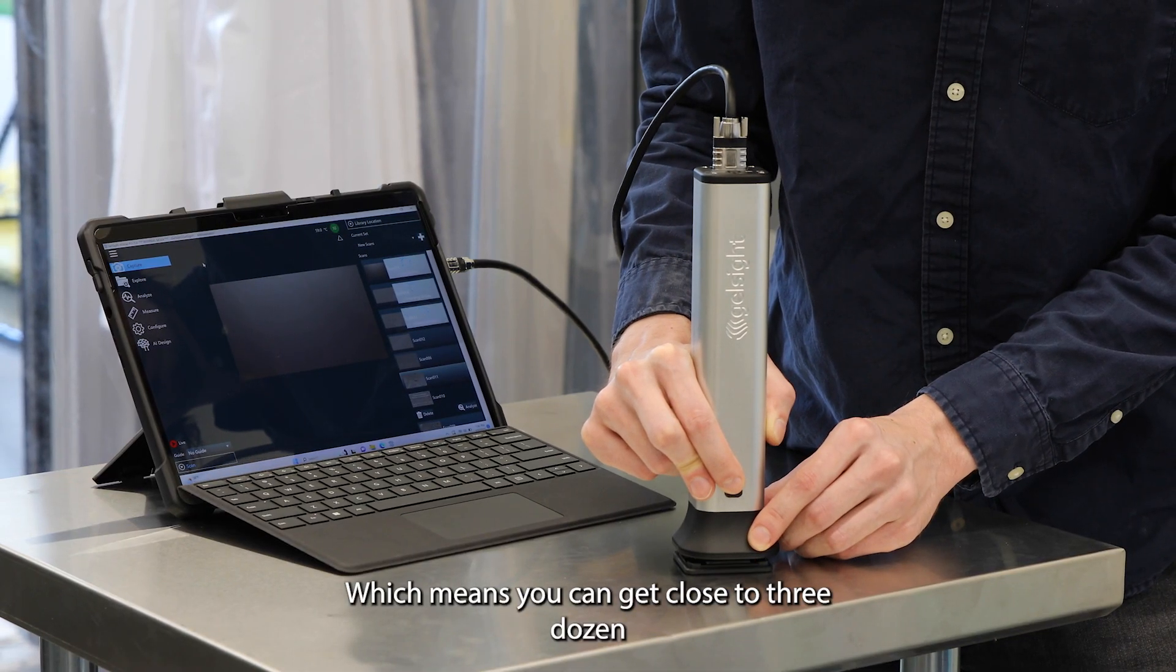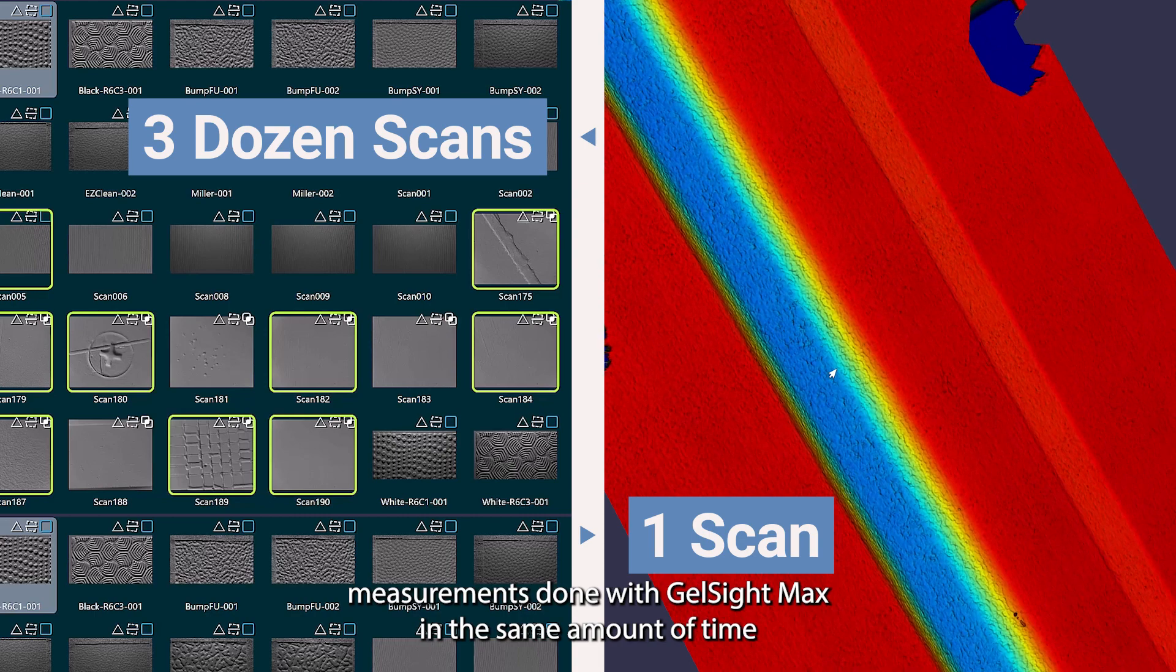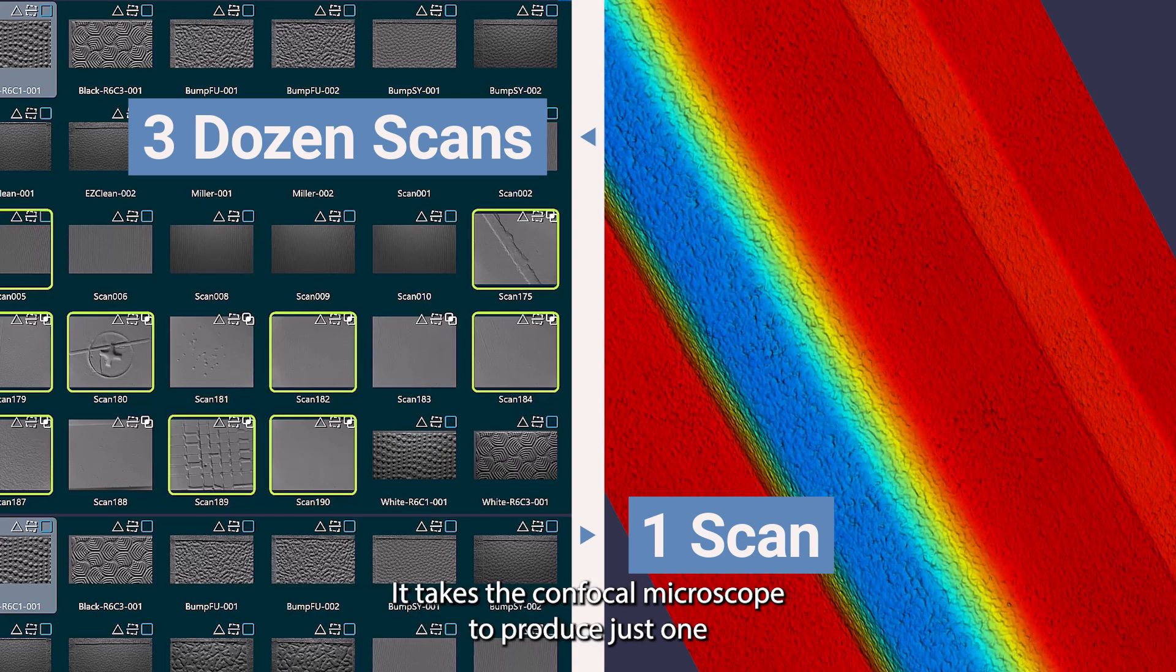Which means you can get close to three dozen measurements done with GelSight MAX in the same amount of time it takes the confocal microscope to produce just one.